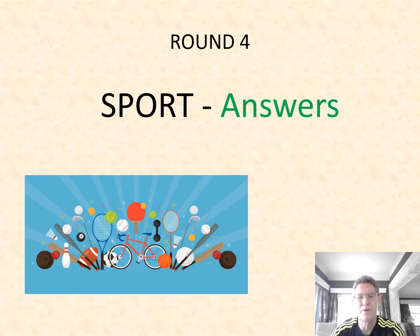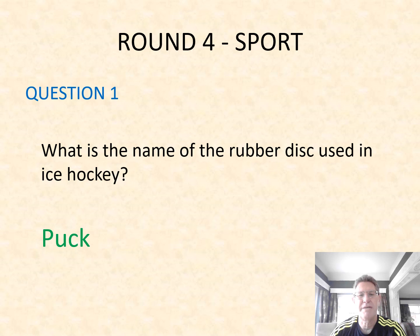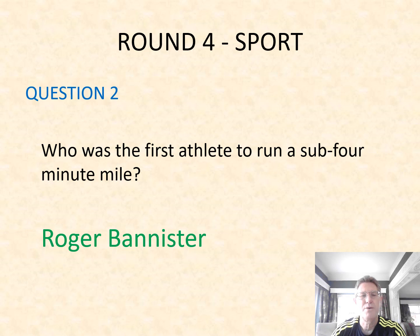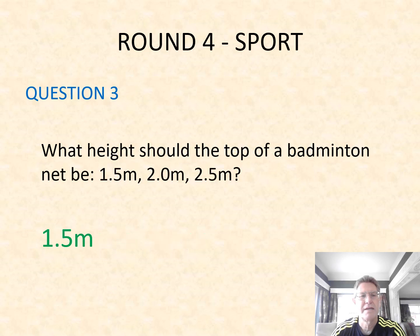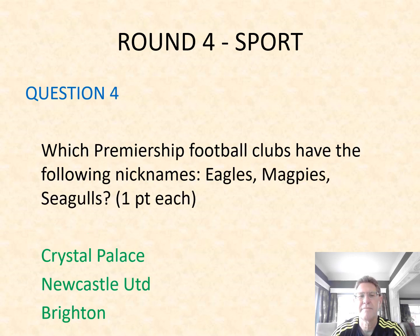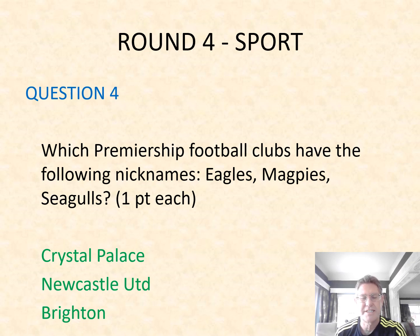On to round four — sport. Question one: what is the name of the rubber disc used in ice hockey? It's called a puck. Question two: who was the first athlete to run a sub four-minute mile? Roger Bannister was the first to run a mile in under four minutes. Number three: what height should the top of a badminton net be? It should be 1.5 metres. Question four: which Premiership football clubs have the nicknames Eagles, Magpies and Seagulls? They are Crystal Palace, Newcastle United and Brighton.